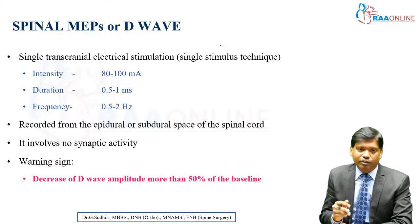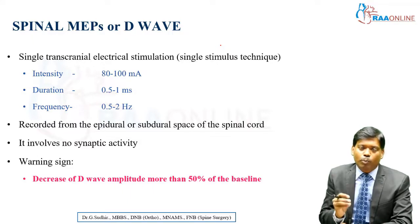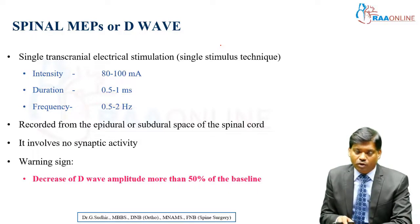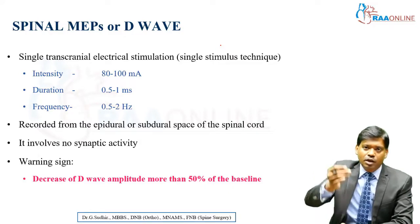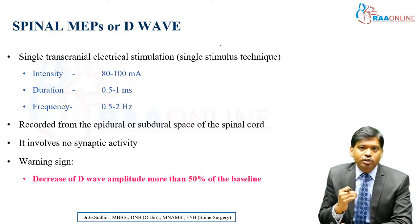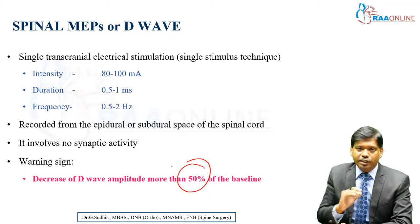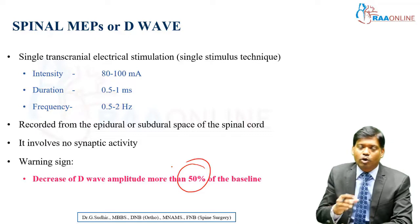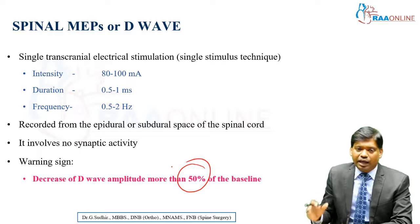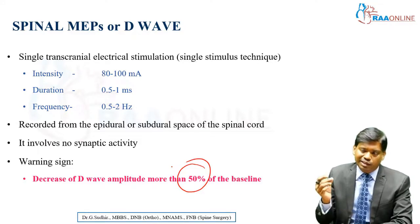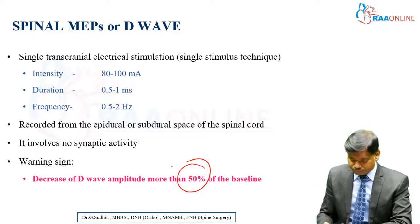For spinal MEPs or D-waves, a single transcranial electrical stimulation of about 80 to 100 milliamperes intensity, 0.5 to 1 millisecond duration, and 0.5 to 2 hertz frequency can be recorded from the epidural or subdural space of the spinal cord. It involves no synaptic activity. The warning sign is a decrease in direct wave amplitude of more than 50% from baseline. Baseline recording is performed after patient positioning but before incision. D-waves are not commonly used in practice because placing an intrathecal or epidural electrode is quite cumbersome.